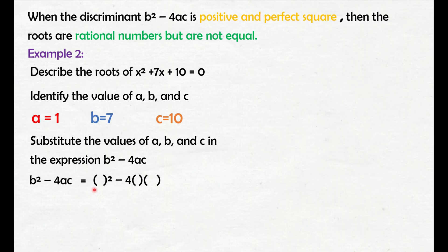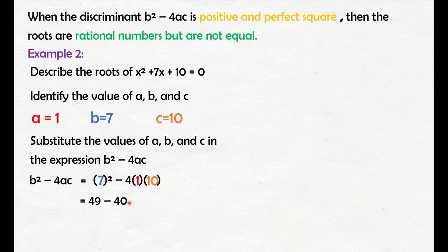Substitute the values of a, b, and c in the expression b squared minus 4ac. Si b is 7, si a is 1, si c ay 10. Simplify: 7 squared, that is 49. Negative 4 times 1 times 10, that is negative 40. Simplify 49 minus 40, that is 9. Yung discriminant dito is 9, at alam natin na si 9 ay perfect square number — positive and perfect square. Yung makakuha daw nating roots dito ay rational numbers but are not equal.